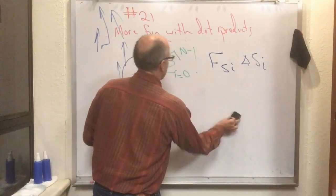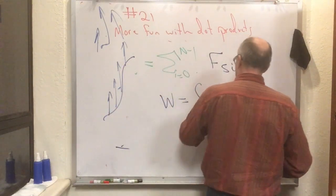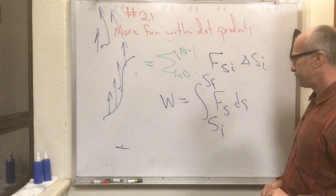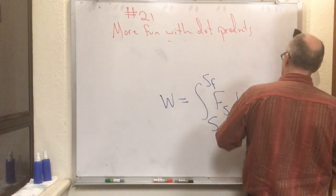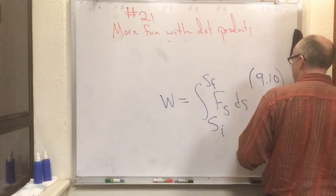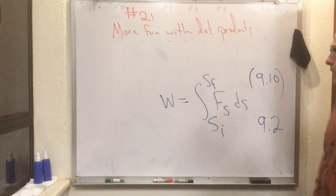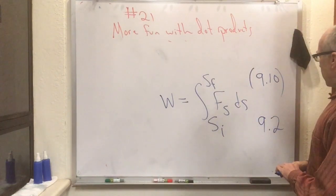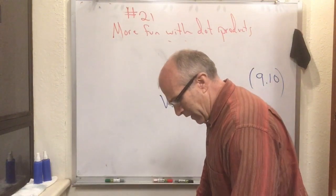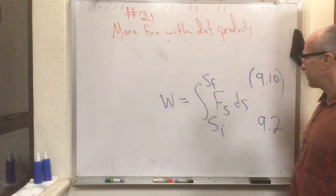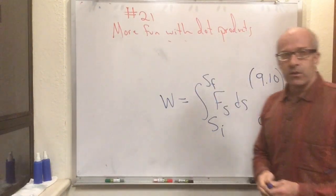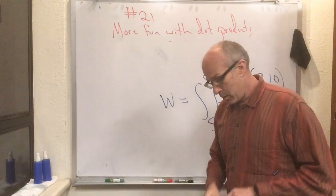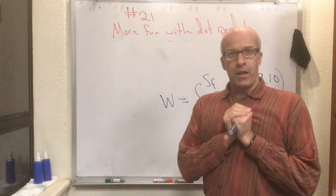With that simplification, we are going to do quite a few calculations of the integral of F_s ds from the initial point to the final point along the path. I've finally gotten equation 9.10 the way Knight gets it in section 9.2 — the fully general version with varying forces and curved paths. In the next flipped mini lecture I'll finally get to section 9.4, a model of springs and the work done by a spring, and then on to 9.5.